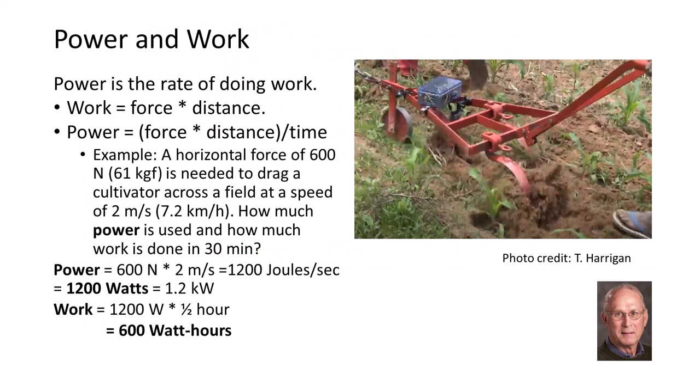Work is the application of force over a distance. Power is the application of force over a distance per unit of time. For example, consider a horizontal force of 600 newtons needed to pull a cultivator across a field at a speed of 2 meters per second. How much power is used and how much work is done in 30 minutes?